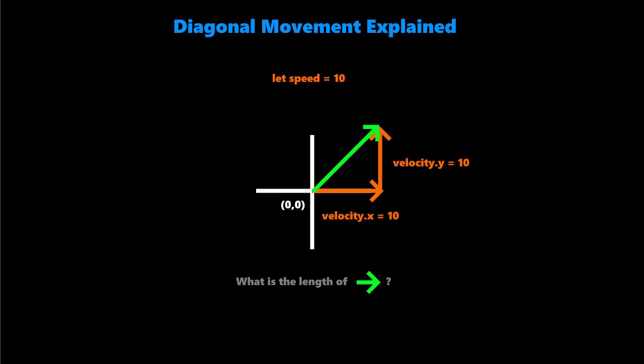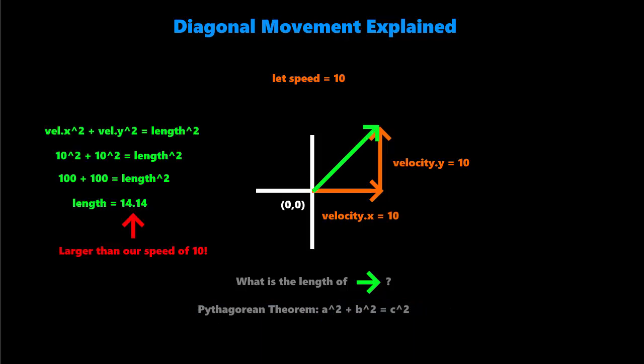Now if you've ever heard of something called the Pythagorean theorem, you have a squared plus b squared equals c squared, we can calculate the length of this diagonal right here. And if we do that math, which I wrote out over here,